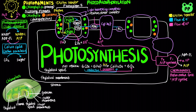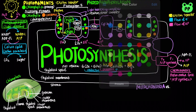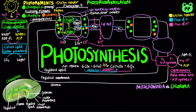Both mitochondria and chloroplasts exploit the electrochemical gradient of protons to generate ATP by chemiosmosis, but they have different sources of energy and spatial organization.